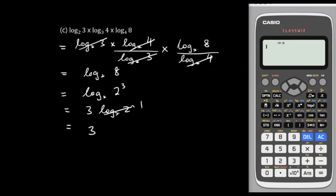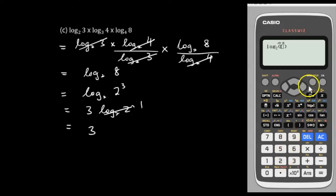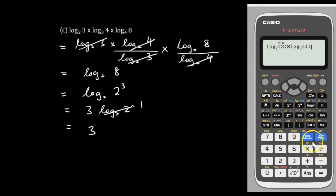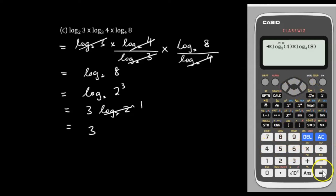Now we're going to use the Casio Classwiz calculator to double check our answer. Go to the log button, enter base 2, then 3, go to the right and times. Press log again, base 3, then 4, times. Press log again, base 4, then 8. You get the answer 3.